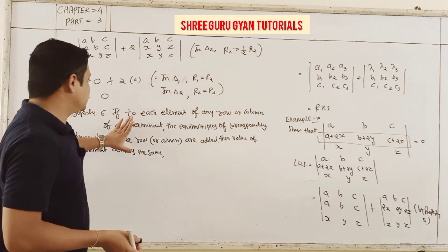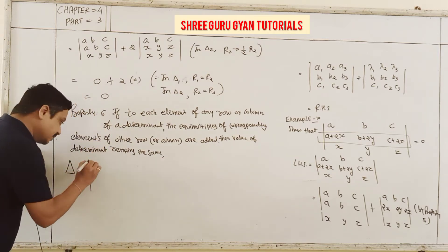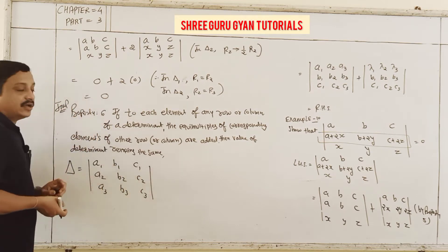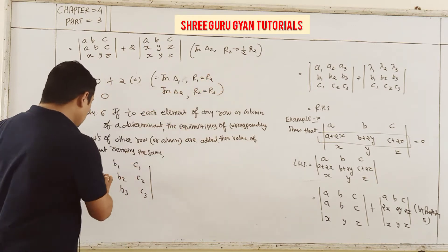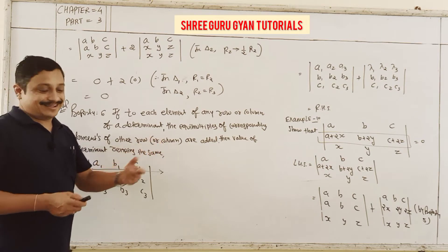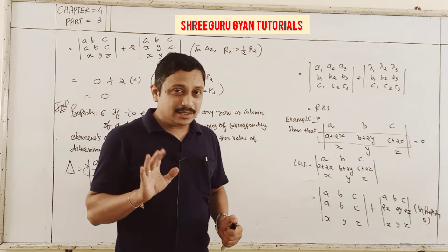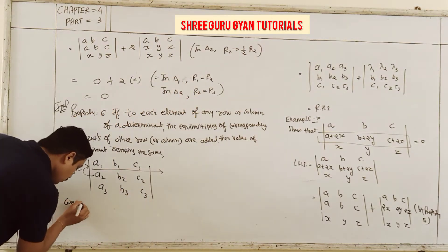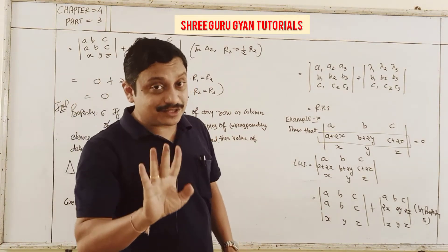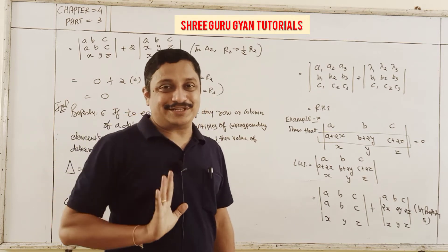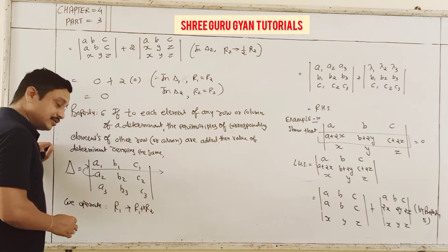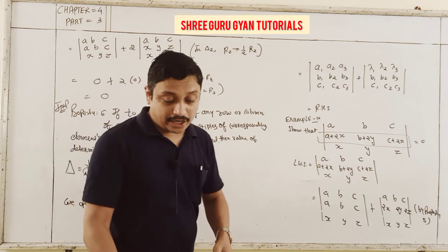We can apply this using properties. Consider determinant del with elements A1, B1, C1; A2, B2, C2; A3, B3, C3. Each element of row 1 — we choose row 1 — we add the equimultiple of corresponding elements of another row. Say we add K times row 2 to row 1 (R1 → R1 + K·R2), where K is a non-zero constant. So we get: A1+KA2, B1+KB2, C1+KC2 in the first row; A2, B2, C2 and A3, B3, C3 unchanged.